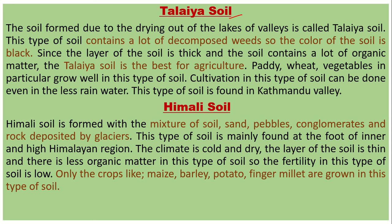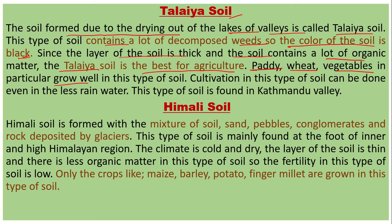The fourth is lake clay soil. The soil formed due to the drying out of lakes in the valley is called lake clay soil. This type of soil contains a lot of decomposed weeds, so the color of the soil is black. Since the layer of the soil is thick and it contains a lot of organic matter, it is best for agriculture. Paddy, wheat, and vegetables grow particularly well here, and cultivation can be done even with less rainfall. This type of soil is found in the Kathmandu Valley.